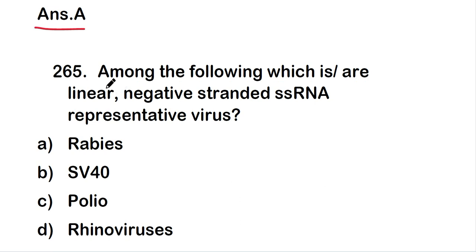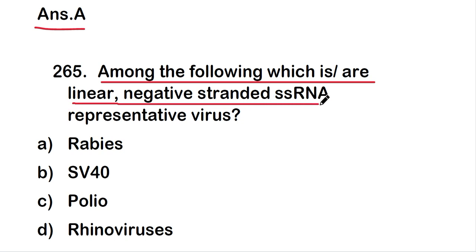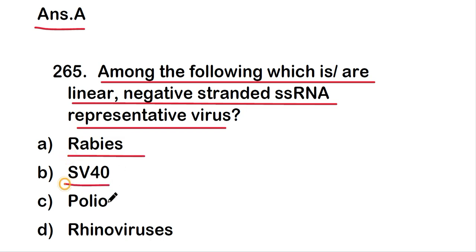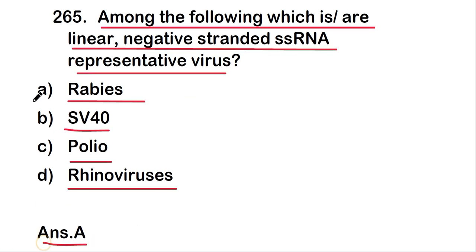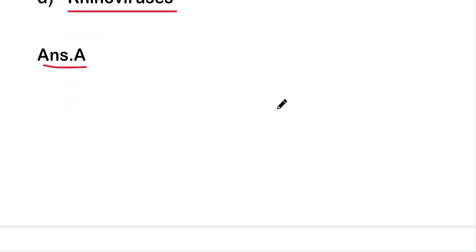The next question: among the following, which is or are linear negative-stranded single-stranded RNA representative virus? The options are rabies virus, SV40, poliovirus, or rhinovirus. The right answer is option A — rabies virus is a linear negative-stranded single-stranded RNA representative virus.